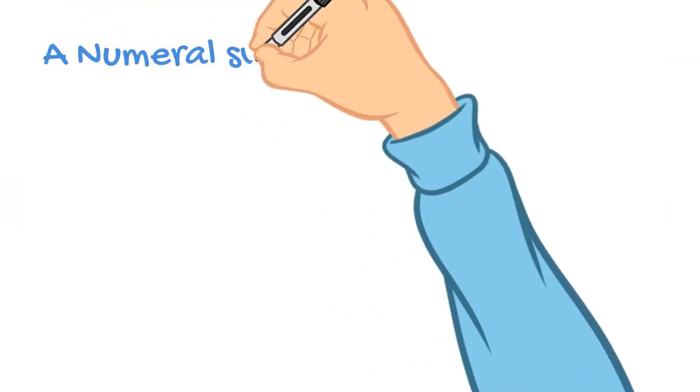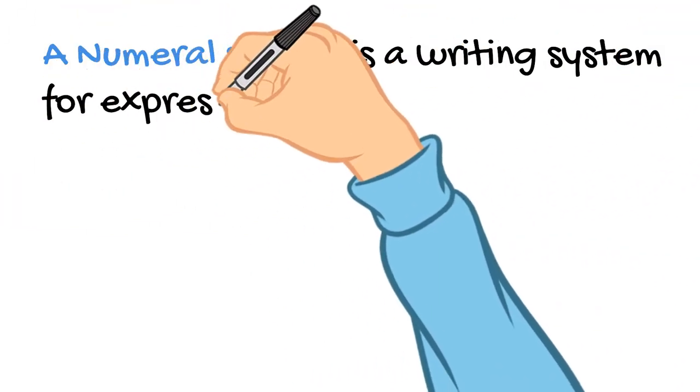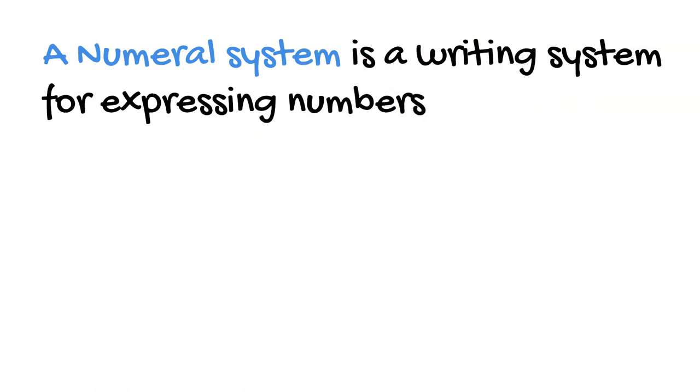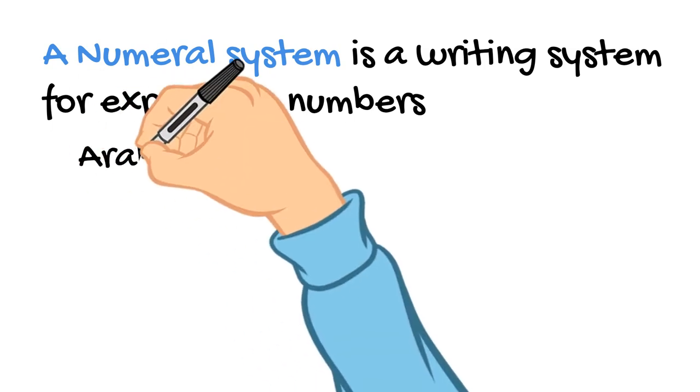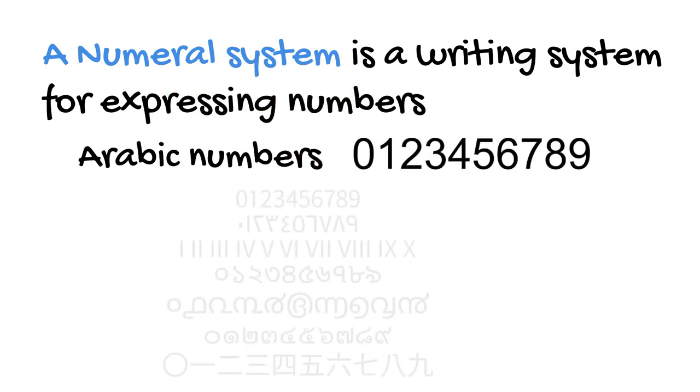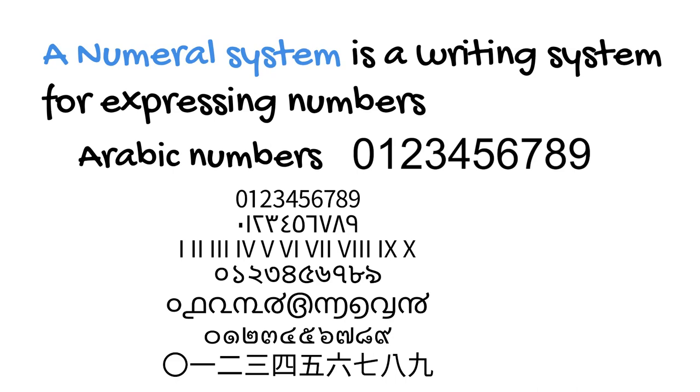A numeral system is a writing system for expressing numbers. The building blocks of a numeral system are certain symbols which in our case are known as Arabic numbers. But remember that in other systems different symbols are used.